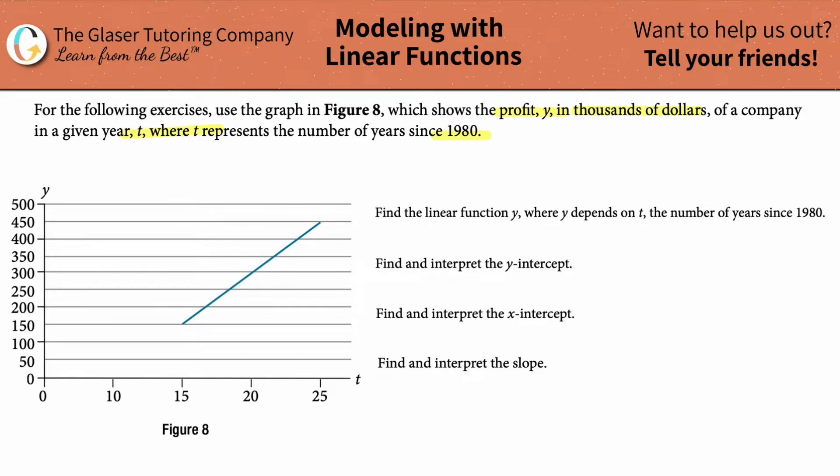So the first question is saying, find the linear function Y, where Y depends on T, the number of years since 1980. All this kind of means is just define Y in terms of T. So you're going to find Y, meaning a whole bunch of mumbo-jumbo with a T in it.